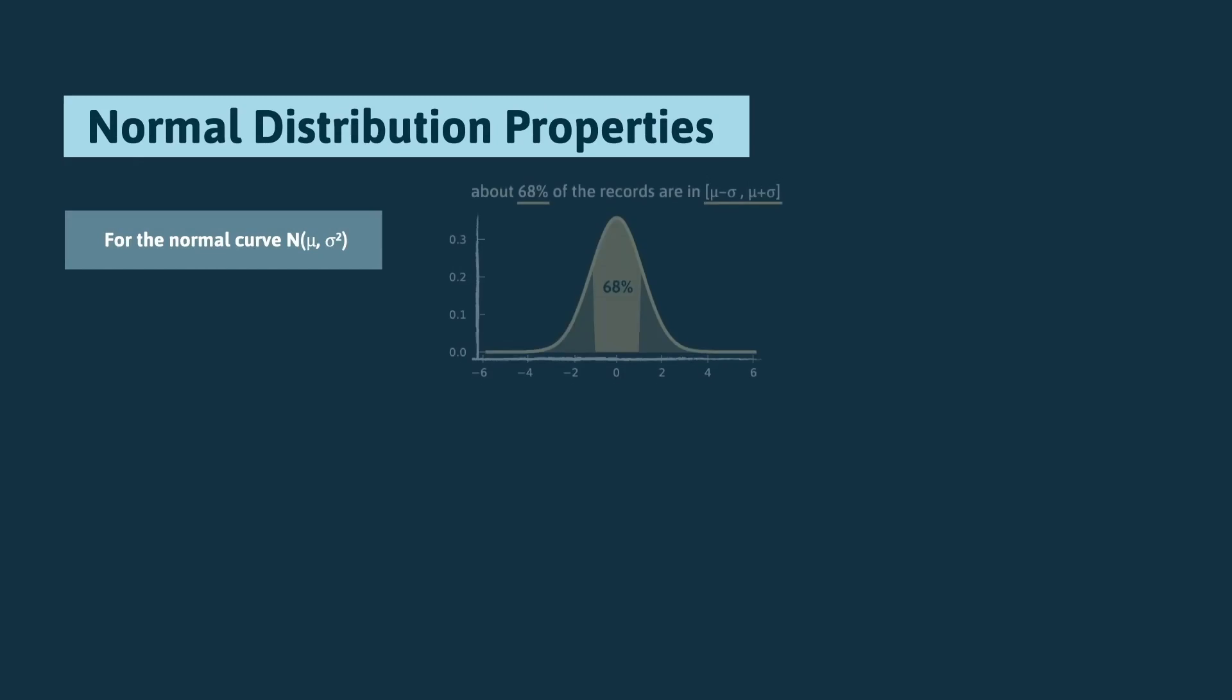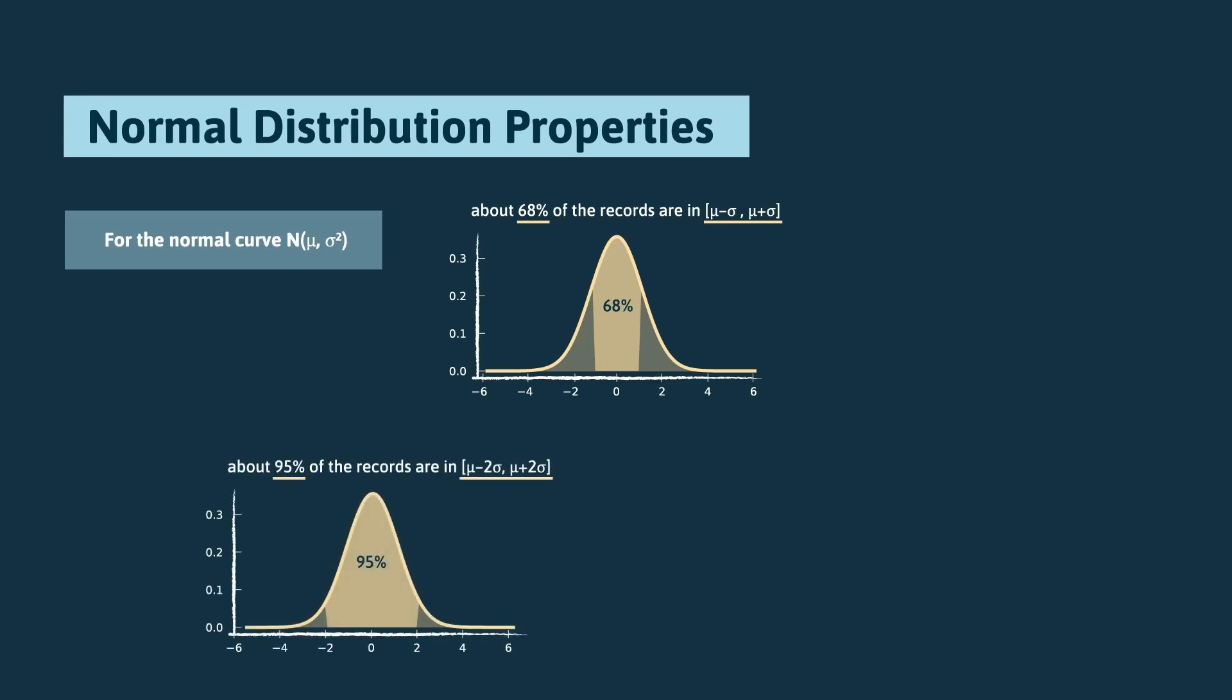Any variable following a normal distribution with mu mean and sigma standard deviation would have approximately 68% of the records assuming values between mu minus sigma and mu plus sigma. More, it would have approximately 95% of the records assuming values between mu minus 2 sigma and mu plus 2 sigma. And almost all the data, approximately 99.7%, would be between mu minus 3 sigma and mu plus 3 sigma.